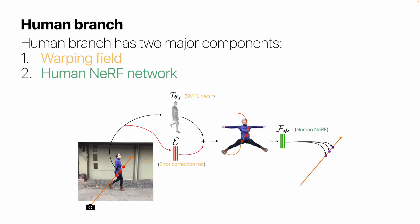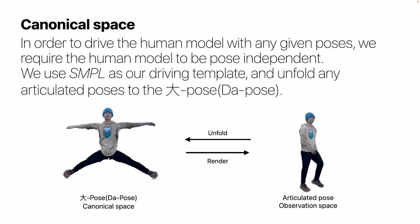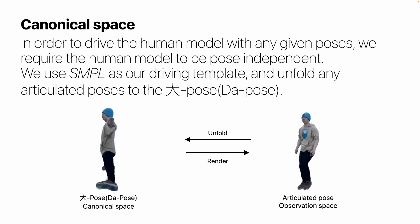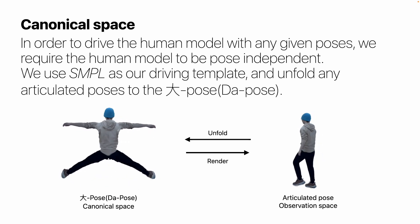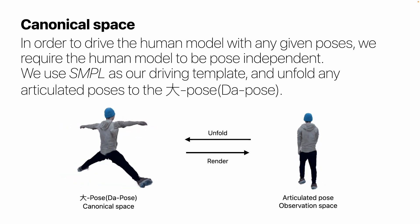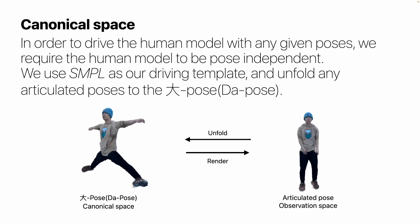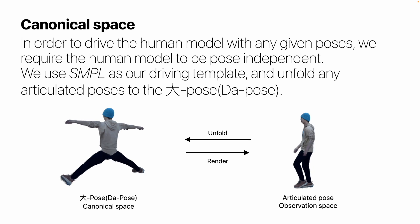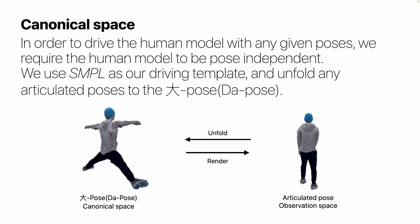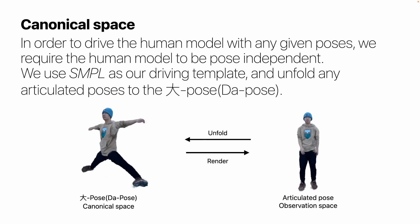The human branch consists of two major components: the warping field and the human NeRF model. Why do we need a warping field? It's because in order to drive the human model with any given poses, we require the human model to be pose independent. When rendering an articulated pose on the right, we first use SMPL as our driving template, and unfold it to the canonical pose and evaluate the colors in its canonical space.